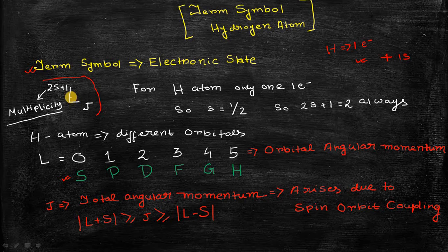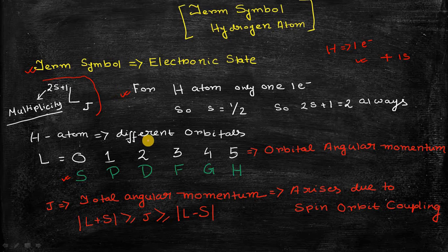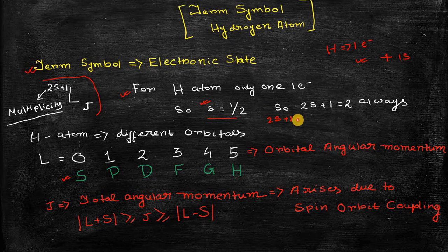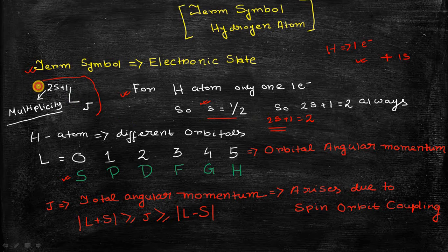In the upper left-hand corner of the term symbol there is a term called 2S+1, which signifies the spin multiplicity. Since hydrogen atom is a single-electron system containing only one electron, the spin quantum number is one-half. Therefore the value of 2S+1 will always be equal to 2, so the spin multiplicity is always 2 for any electronic state of hydrogen atom — it is a constant.